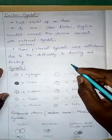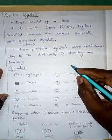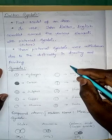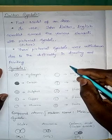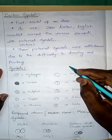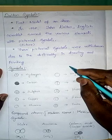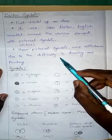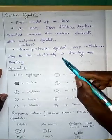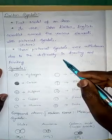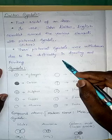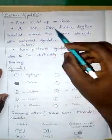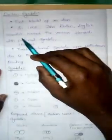Dear children, welcome to the YouTube channel H2O Chemistry. Here you will find chemistry very easy — subscribe for more videos. In this session we are going to learn Dalton symbols. In 1808, John Dalton, an English scientist, named various elements with pictorial symbols.